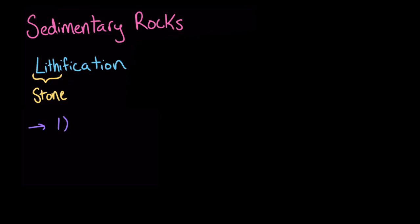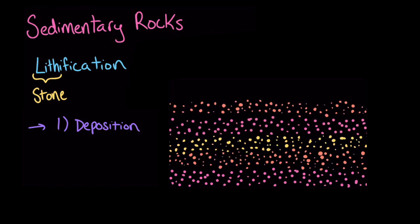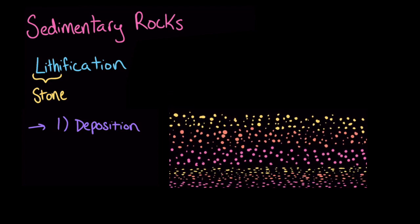But how does sedimentary goop at the bottom of a lake become a rock? Well, it goes through a process called lithification. Lith comes from the Greek word for stone, so you can think of this process as stonification. The first step of lithification is called deposition. This is when sediment is deposited in a new location, and it spreads out to form a layer. As more and more layers are created, the layers underneath them become squished together. This is called compaction.